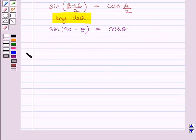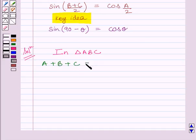Now let us start the solution. We are given that A, B and C are interior angles of a triangle ABC. So we can write in triangle ABC, A plus B plus C is equal to 180 degrees by angle sum property of a triangle.